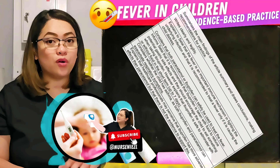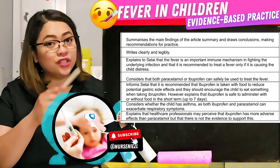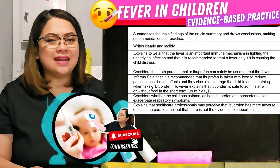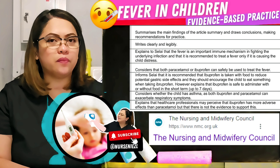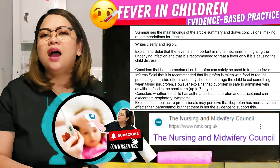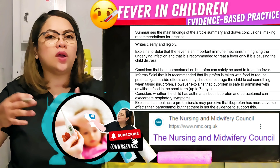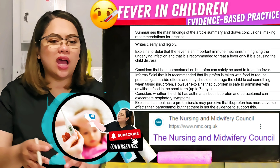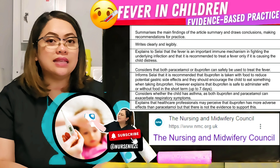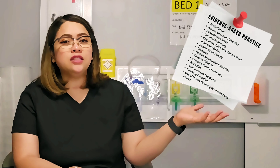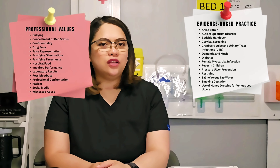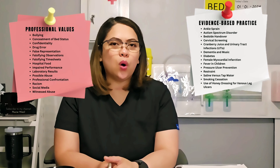Read it and memorize it by heart. There's just too many, isn't it? Aside from the fact that you have to memorize the marking criteria from the APAI or from the 21 scales, plus 15 evidence-based practices and 15 professional values — so how are you going to manage that?